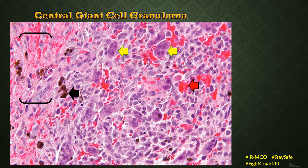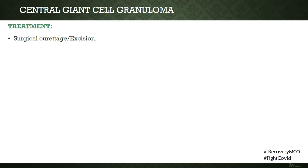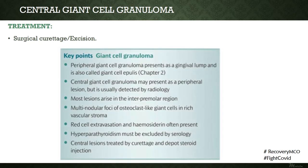Hemosiderin pigmentation can also be seen within the stroma. These extravasated RBCs and hemosiderin pigments possibly suggest a traumatic etiology resulting in hemorrhage. Treatment for central giant cell granuloma basically requires complete excision or surgical curettage. It should be remembered that most of these lesions occur in the anterior premolar region — between or ahead of the premolars — and are always intraosseous, hence the term 'central' giant cell granuloma.